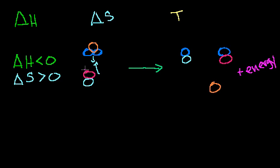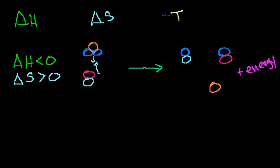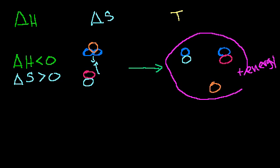So it seems pretty obvious that this reaction is going to be spontaneous in the forward direction. It's much easier for two particles to bump into each other just right than for three particles to come together just right from a probability point of view. And these guys are more stable — their electrons are in a lower potential state, so there's no enthalpic reason to go in the other direction. I have the intuition that regardless of temperature, we're going to favor this forward reaction.